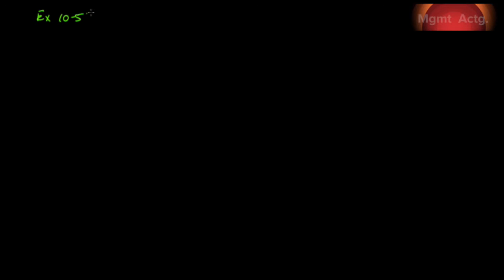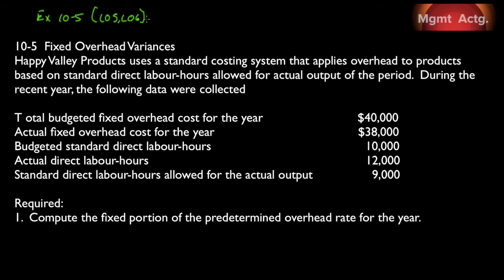Exercise 10-5. This will bring us through learning objective number five and learning objective number six. Happy Valley Pet Products uses a standard costing system that applies overhead to products based on standard direct labor hours allowed for actual output of the period. During the recent year, the following data were collected: total budgeted fixed overhead costs were $40,000, actual costs came in at $38,000, budgeted standard direct labor hours were 10,000, actual direct labor hours were 12,000, and standard direct labor hours allowed for the output were 9,000.